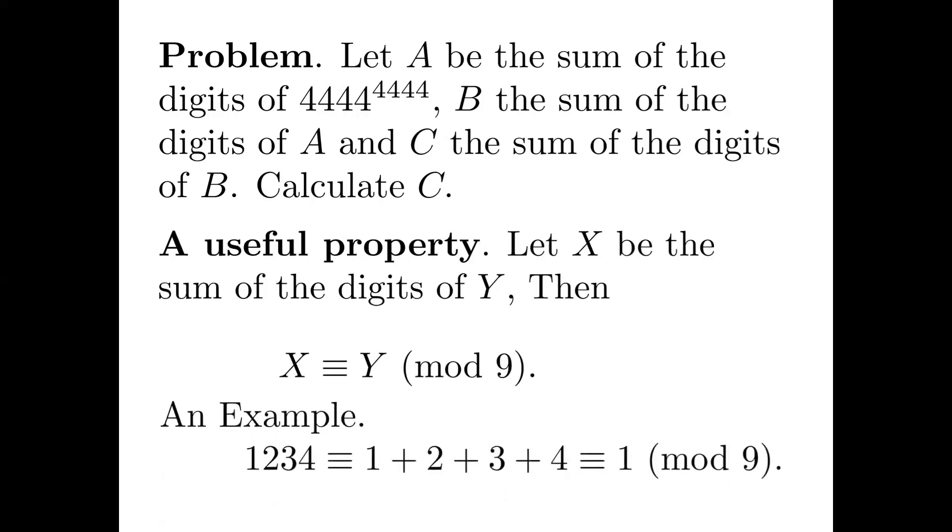This is an example: 1,234. When it is divided by 9, the remainder is 1. This is the same as the sum of each digit, 1 plus 2 plus 3 plus 4, then divided by 9.